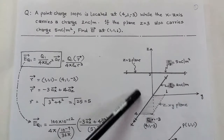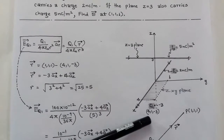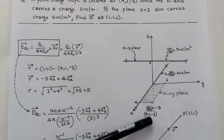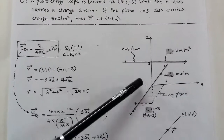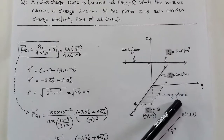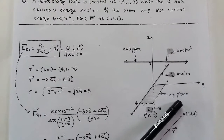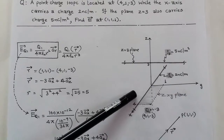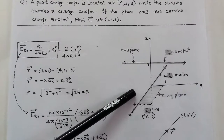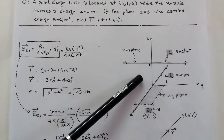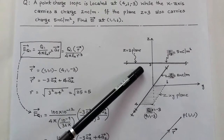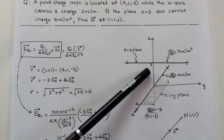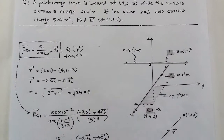For the point charge at (4, 1, -3), the x and y coordinates are positive while z is negative, so this point is below the x-y plane. The line charge is on the x-axis from minus infinity to plus infinity — an infinite line charge with density 2 nanocoulombs per meter. The third is a surface at z = 3 with surface charge density ρs of 5 nanocoulombs per meter squared.